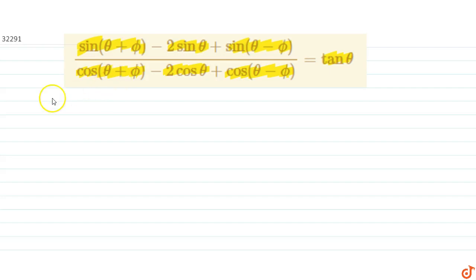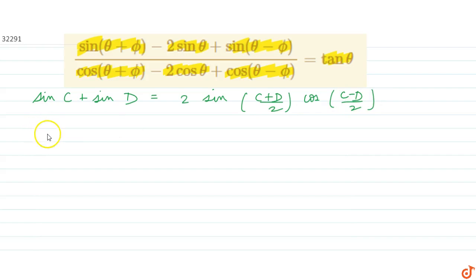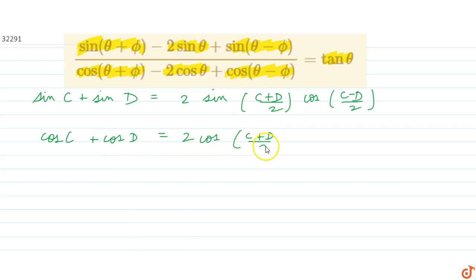To solve this question we will use the identity for sin C plus sin D, which equals 2 sin((C+D)/2) into cos((C-D)/2), and the second identity: cos C plus cos D, which equals 2 cos((C+D)/2) into cos((C-D)/2).